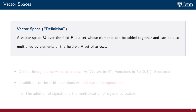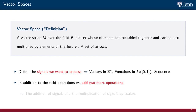A vector space is a set of arrows. For our purposes, the vector space defines the type of signals that we want to process. They can be vectors in Rn, square integrable functions on the interval [0,1], or sequences. The difference between a field and a vector space is the incorporation of two new operations: the addition of signals and the multiplication of signals by scalars.